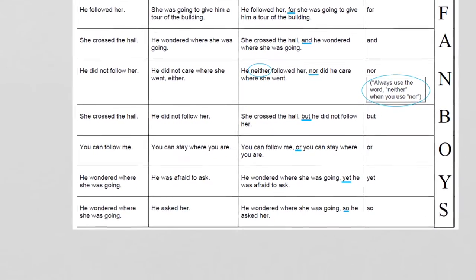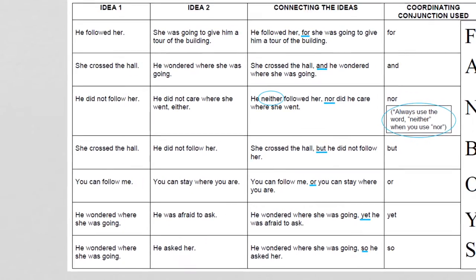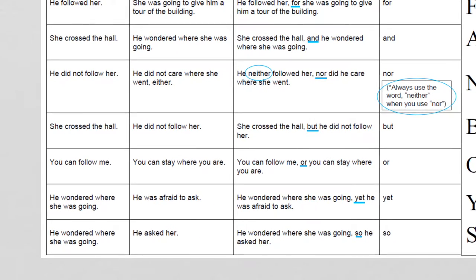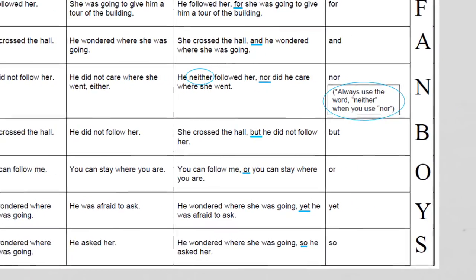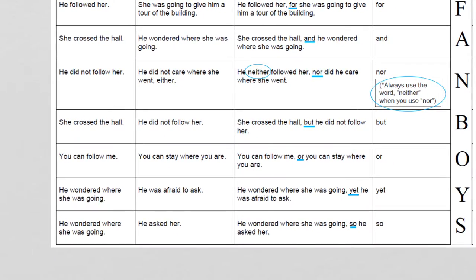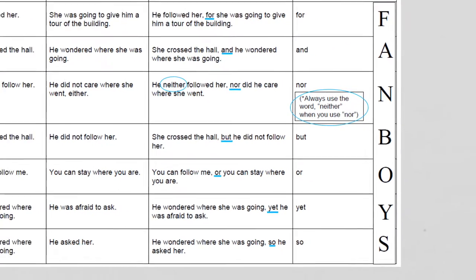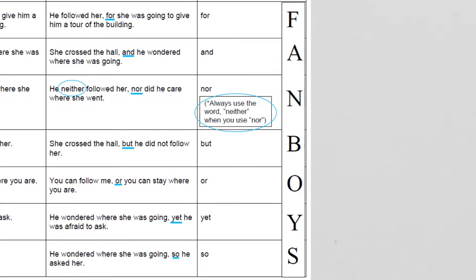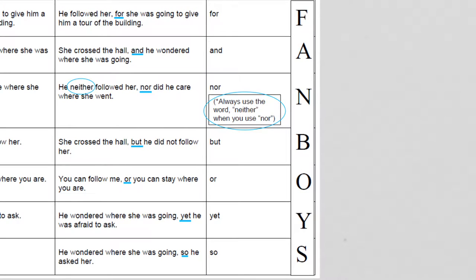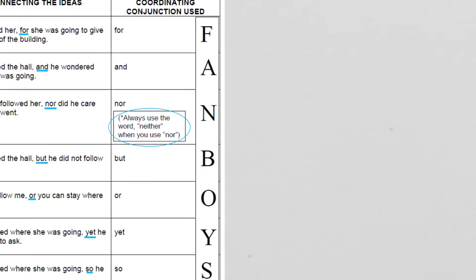Second example: 'She crossed the hall' and 'He wondered where she was going' combine to: 'She crossed the hall, and he wondered where she was going.' Our coordinating conjunction there is 'and.'